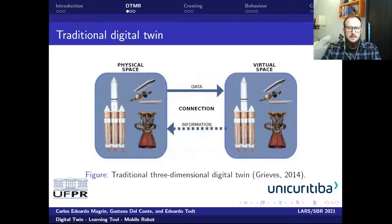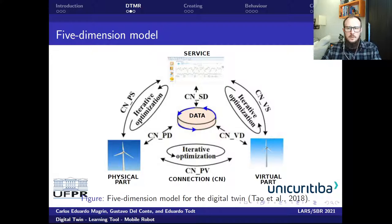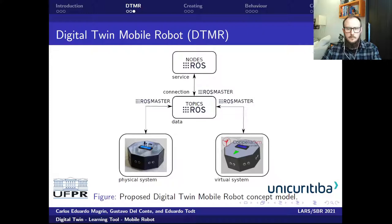The traditional three-dimensional Digital Twin, proposed by Greaves, provides the basics for creating a real mobile robot model in a virtual environment, using physical space, virtual space, and connection. Tao proposes a five-dimension Digital Twin shop floor conceptual model, including physical part, virtual part, connection, data, and service. We use this full five-dimension Digital Twin concept for proposing the Digital Twin mobile robot.